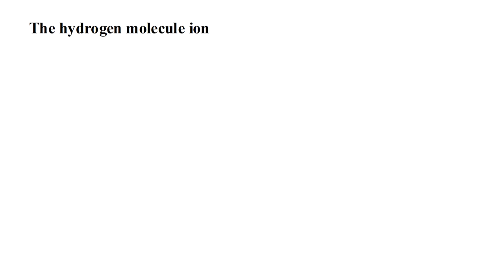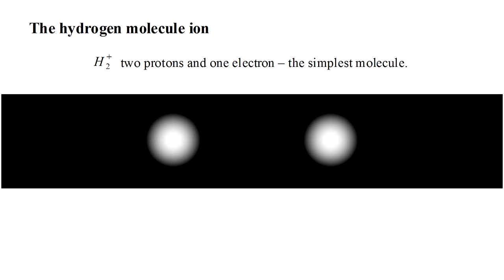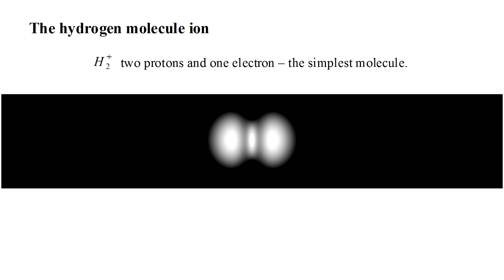The first molecule to be analyzed using quantum mechanics was the hydrogen molecule ion. This is denoted H2 plus and contains two protons and one electron. With two nuclei and a single electron, it's the simplest of all molecules. We can imagine two hydrogen atoms coming together to form a hydrogen molecule, followed by one of the two electrons being removed through impact, radiation, or some other process.